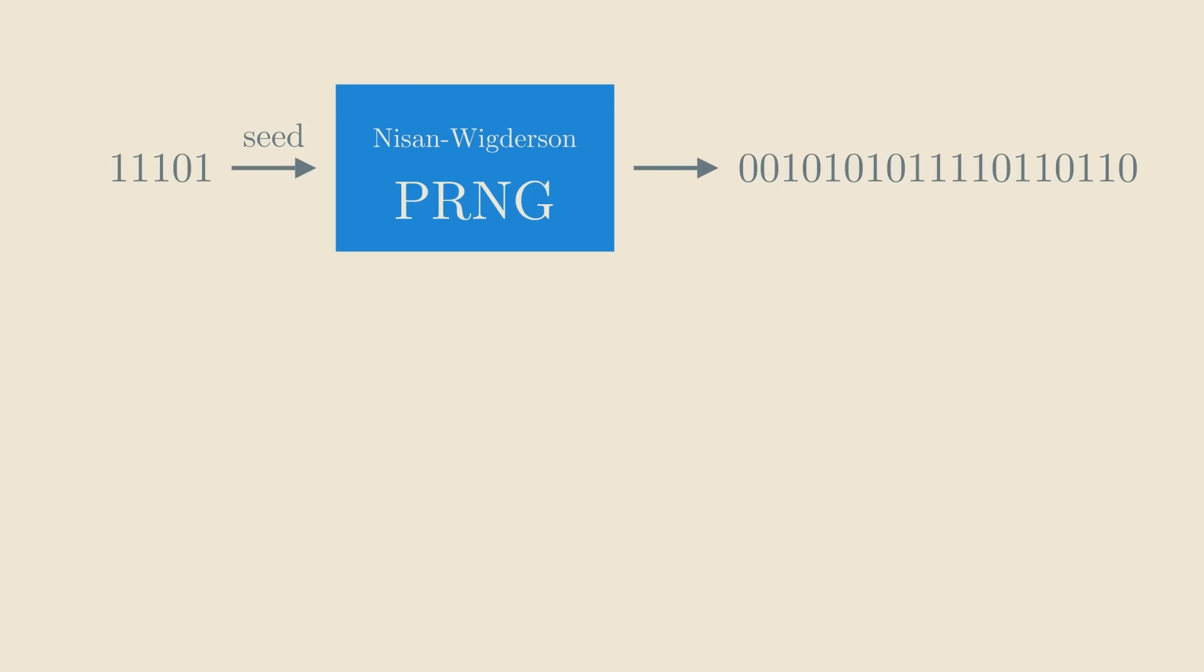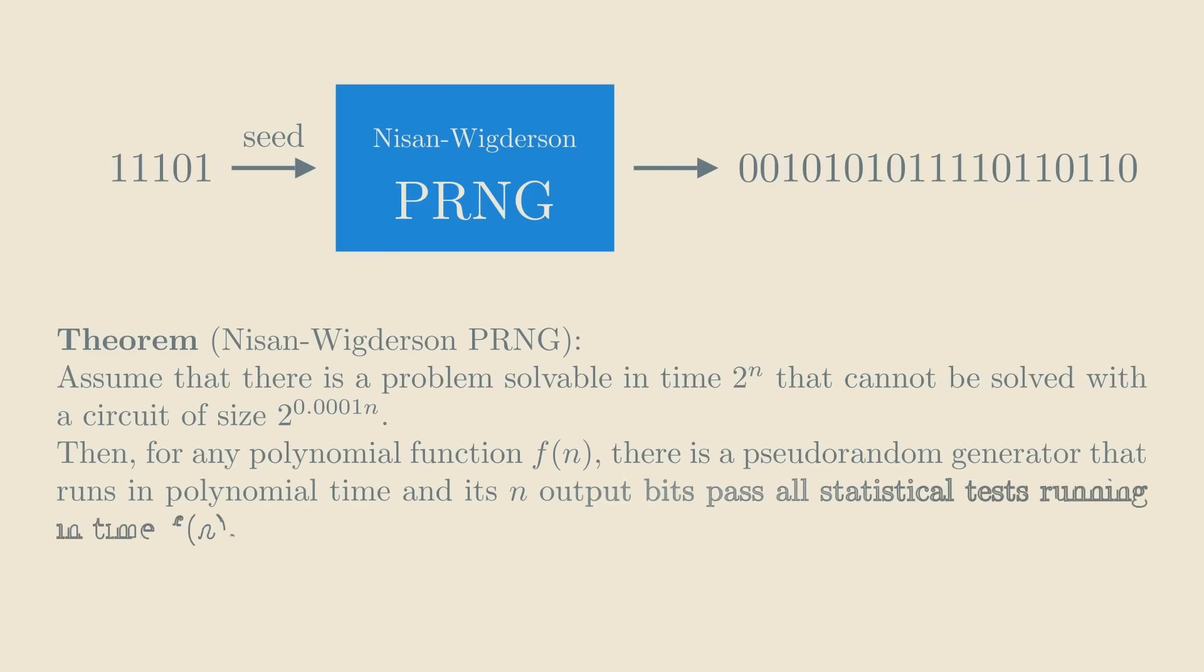The big advantage of the Nisan-Wigderson generator is that we can actually prove that it has this property, given a very plausible, though yet unproven, assumption in complexity theory. This is actually the hardest part of the P equals BPP proof, and we won't go into it here. In the case of the pi-based generator, it's very difficult to see how you could prove this formally, even though it might be true.